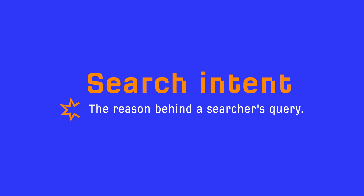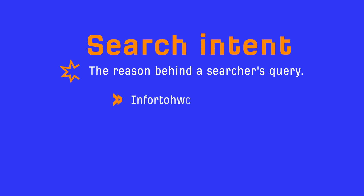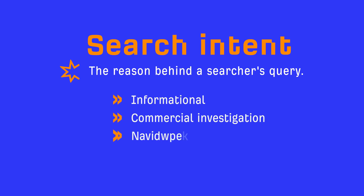By understanding these fundamental concepts, it'll help you to utilize keyword difficulty scores more effectively. The first thing to consider is search intent — the reason behind a searcher's query. Generally speaking, these can be broken down into four groups: informational, commercial investigation, navigational, and transactional.